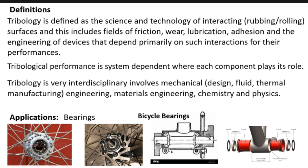Interacting surfaces — it's very important to understand that in tribology there are always two surfaces involved. There is no tribology for a single surface. In most other types of engineering properties, like mechanical properties, we talk about one single material and its yield strength or fatigue life. But here we are always concerned about two interacting surfaces — two different solids — and it can be in rubbing contact or rolling contact.